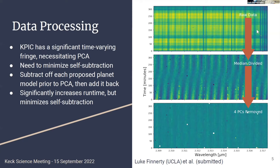Unfortunately, some problems sometimes show up when you have a new instrument. We have our raw data, and we hoped we could scale and divide it to get a nice flat clean spectral time series. Instead, we have a nasty time-varying fringing signal. We've figured out what caused this — there is a workaround in Shack-Hartmann mode in phase two. Fortunately, this is effectively removed through principal component analysis. When you do PCA you have to be careful not to accidentally distort the planet signal, so we take a negative injection approach: subtract the proposed planet model, do the PCA, then add the planet model back.